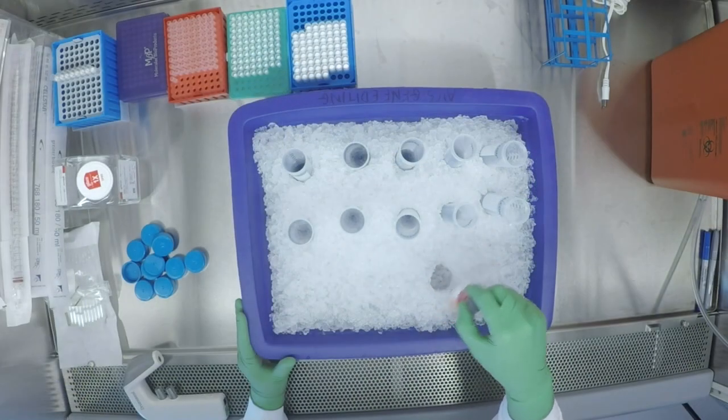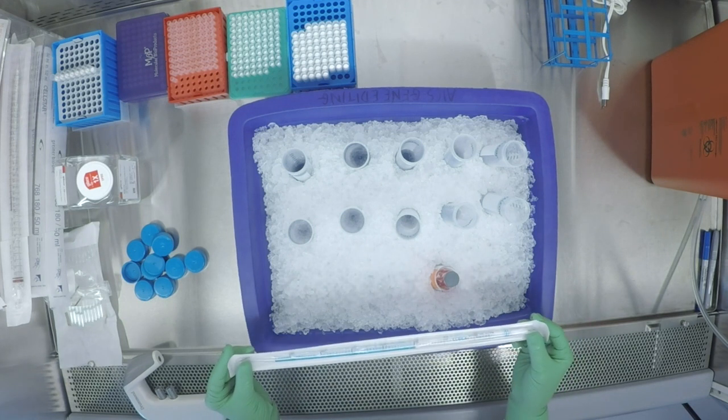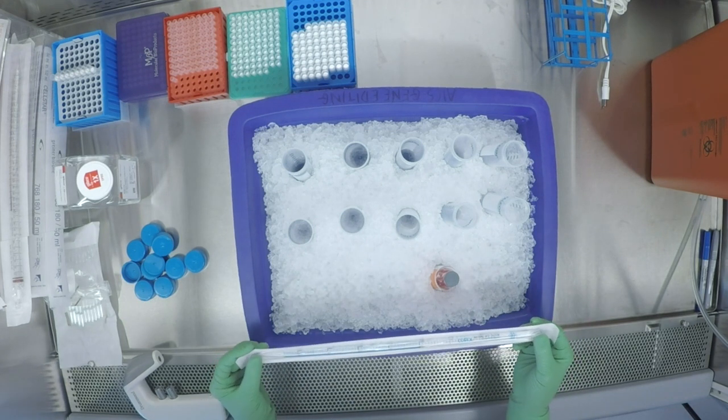Gently swirl the contents in the vial to make sure that it is properly mixed. We use a 5 ml pipette that has been pre-chilled in the freezer for aliquoting so the Matrigel doesn't warm up in the process.